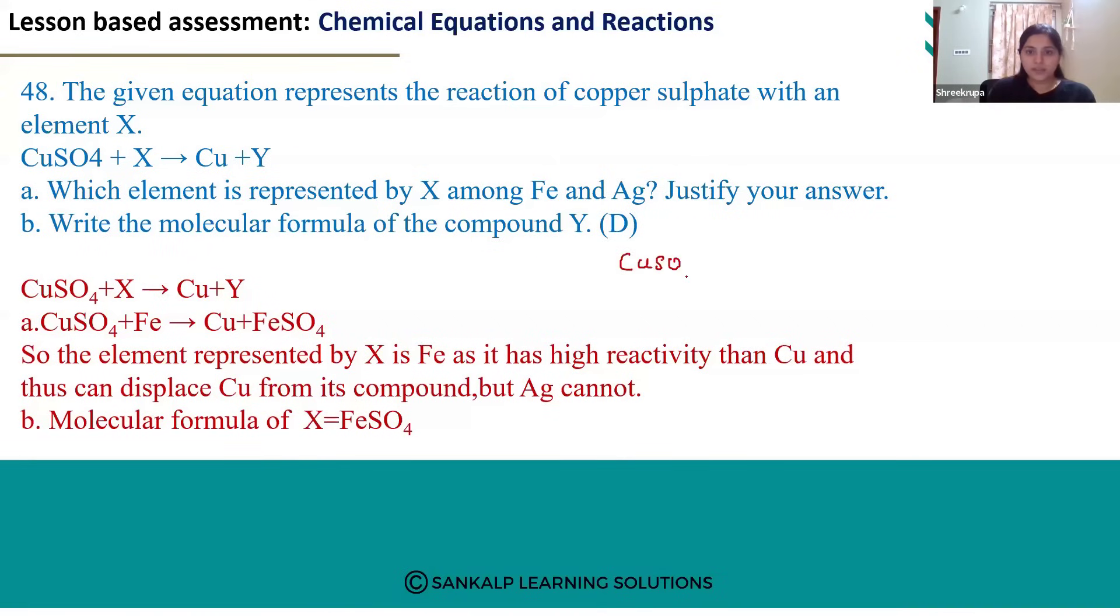Copper sulfate is one reactant and when we take other reactant as Ag, we will observe no reaction here because reactivity of Ag is less than the reactivity of copper. So Ag cannot displace copper from its compound.